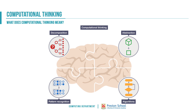Fortunately we have a skill set and it is called computational thinking. There are four cornerstones to computational thinking: decomposition, abstraction, pattern recognition, and algorithms. We're going to look during this video at what those different sections mean and what each one contains in terms of our problem-solving process.